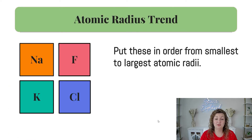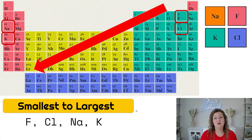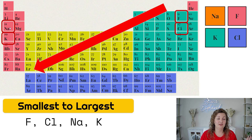I want you to try an example. Go ahead and pause this video and put these elements in order from the smallest to the largest atomic radii. The answer, from smallest to largest, is fluorine, chlorine, sodium, and potassium. I went ahead and outlined them on the periodic table for you. In the upper right-hand corner is going to be our smallest, and that is fluorine. As we work down, chlorine is next, and then over here on the left-hand side — the metal side of the periodic table — we have sodium and then potassium.